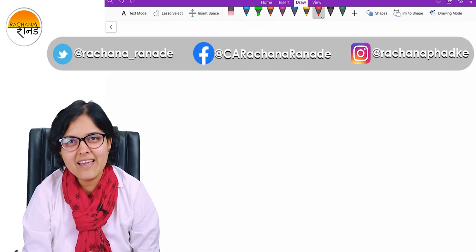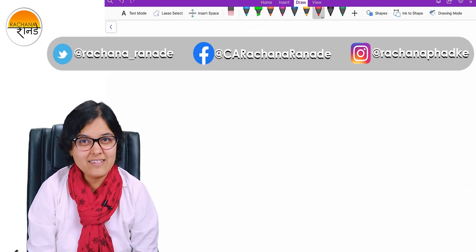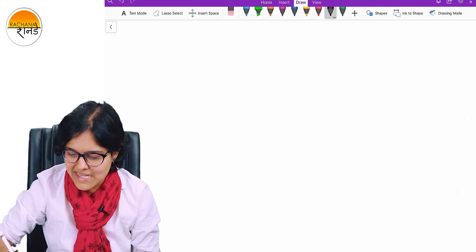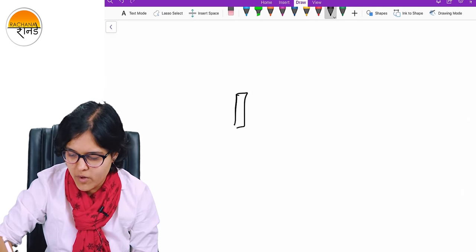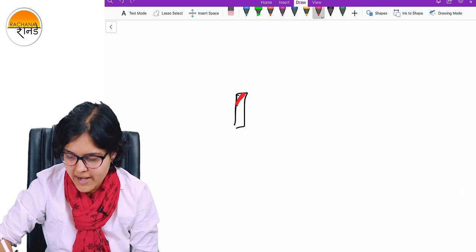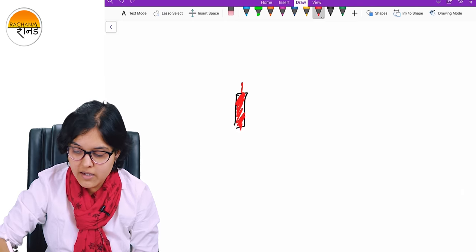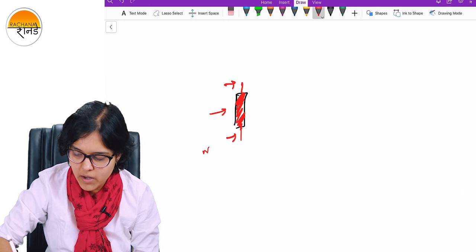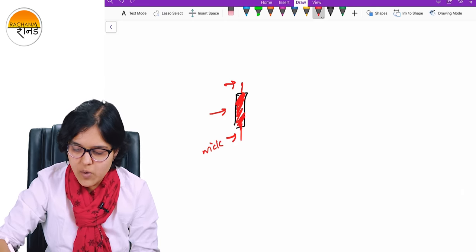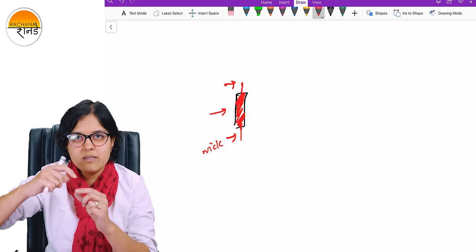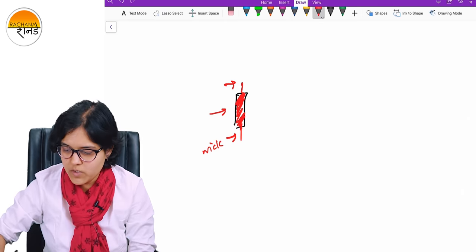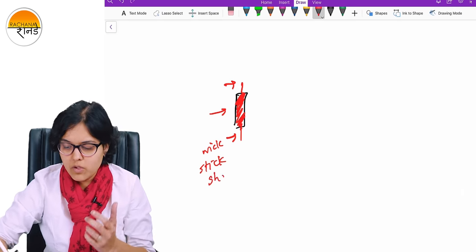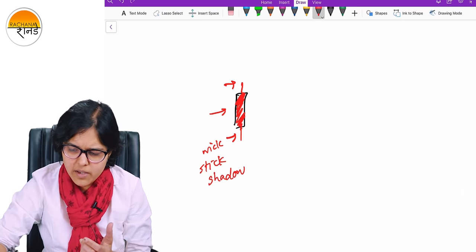Hi guys, C.E. Rachana Ranade here and I welcome you all to my technical analysis lecture series. I'm going to quickly revise the concepts. If you remember, we talked about a candlestick. A red candlestick is known as a bearish candlestick. This is the body of the candle and these two are known as the wick, W-I-C-K. Also known as stick of the candle, or sometimes a shadow of the candle.